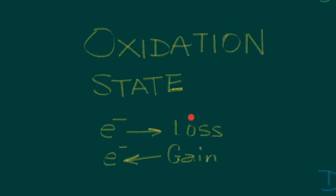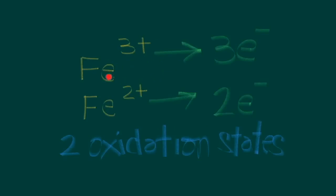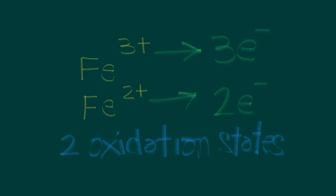Similarly, for ligands, when they carry a negative charge or have gained an electron, the ligand has an oxidation state of negative one corresponding to the number of electrons gained, and the oxidation state becomes negative. If electrons are lost, then you have a positive oxidation state. Iron has an oxidation state of positive three and positive two — loss of three electrons means a plus three oxidation state, loss of two electrons means a plus two oxidation state. Iron typically exists with these two oxidation states.